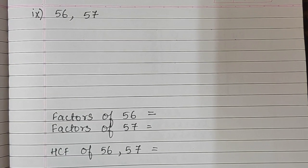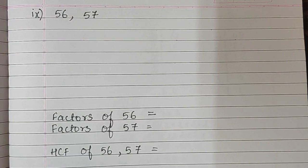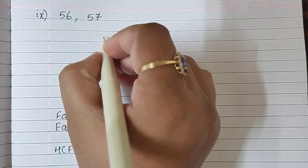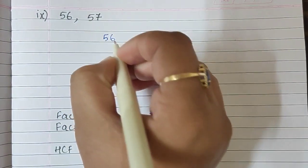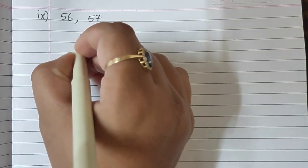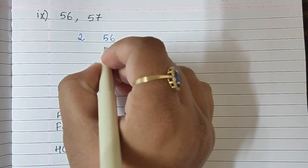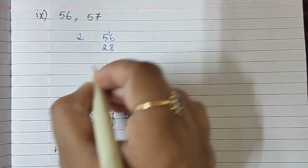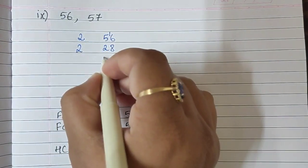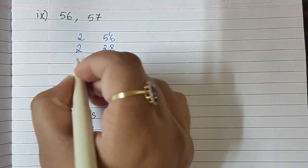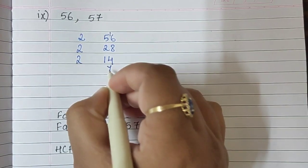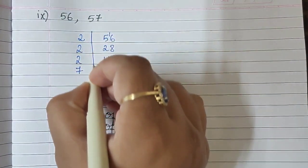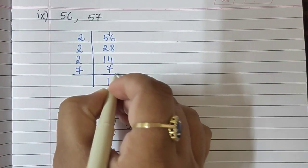Sum number 9 — 56 and 57. We will find the factors of both numbers. 56 is an even number, so we begin with 2. 2 twenty-eights are 56, 2 fourteens are 28, 2 sevens are 14, and 7 ones are 7.